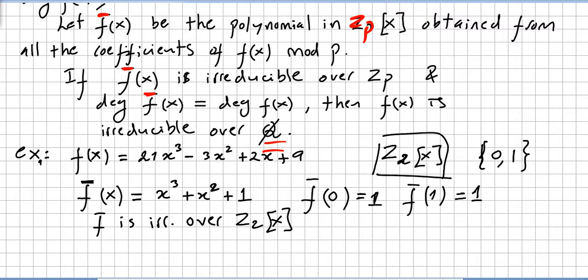So since f̄ is irreducible over Z₂, we can say that f(x) is irreducible over the rationals. Okay, please notice a very important thing here.